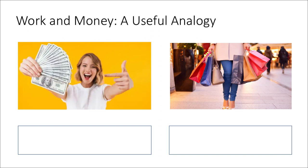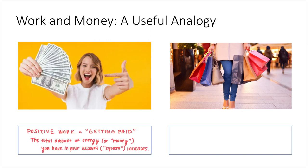You're getting money from somewhere else, and your total amount of money is increasing. This is like doing positive work on a system — when we do positive work on a system, we are transferring energy into that system. So getting paid is like doing positive work; you're increasing the total amount of energy that you have. If getting paid is like positive work, then going shopping would be an example of negative work.